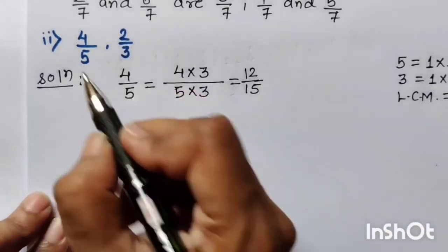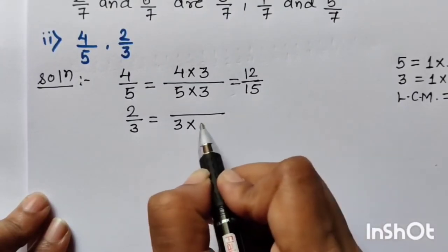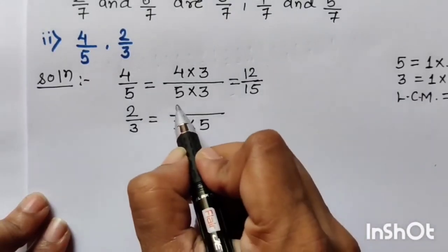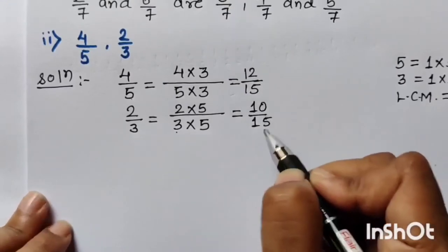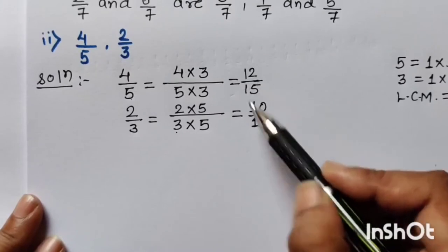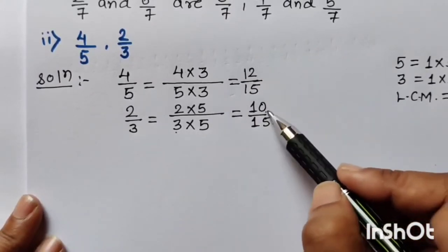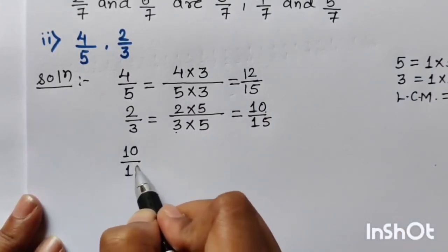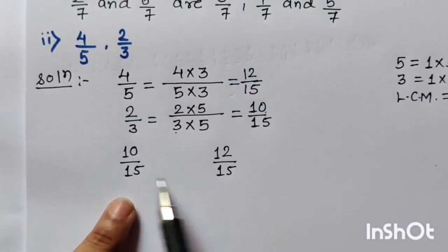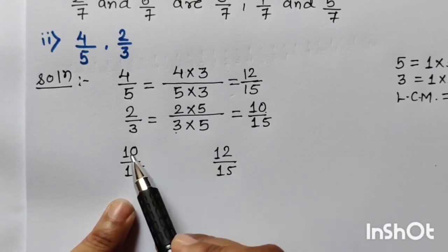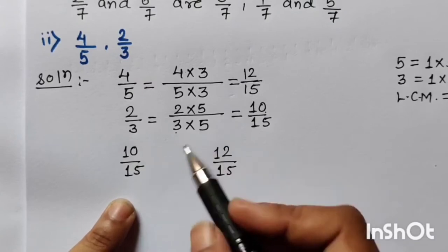For the second number 2 upon 3: multiply 3 by 5 to get 15, so we also multiply numerator 2 by 5 — giving 10 upon 15. Now we have equal denominators. Comparing the numerators: the second number has 10 and the first has 12, so 10 upon 15 is smaller. I write 10 upon 15, put a space, then 12 upon 15. Between 10 and 12, the only integer is 11, giving 11 upon 15 — but we are getting only one number between these two.